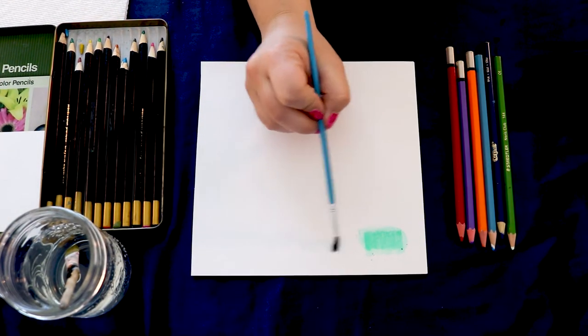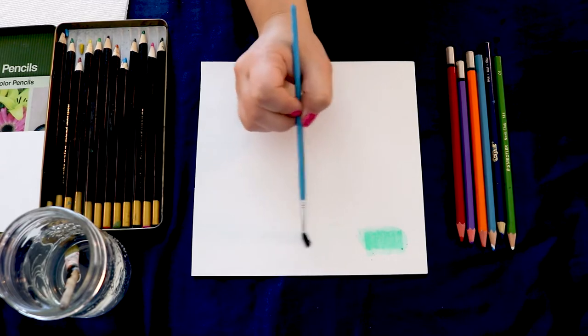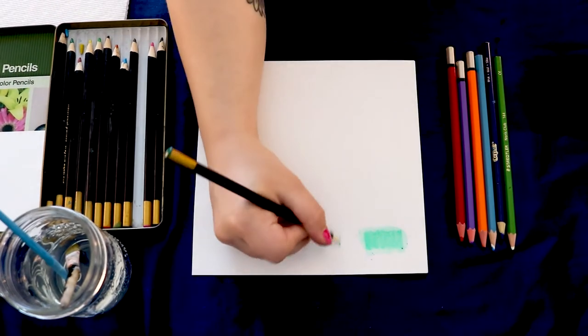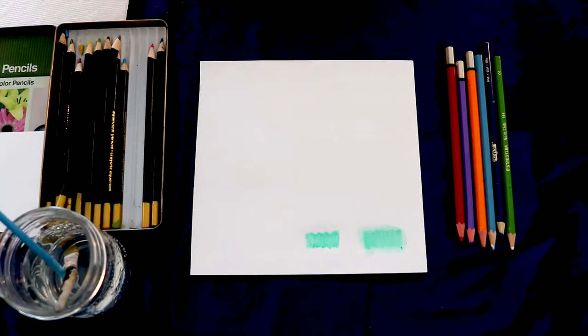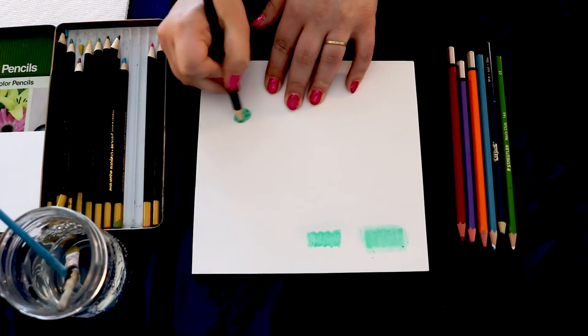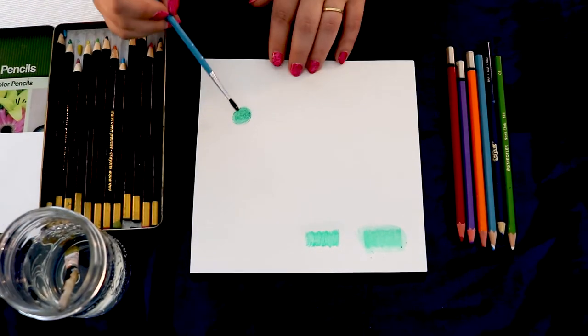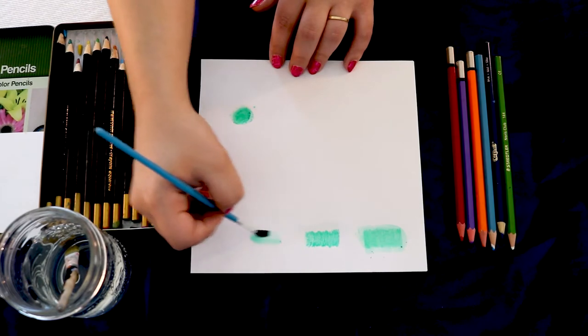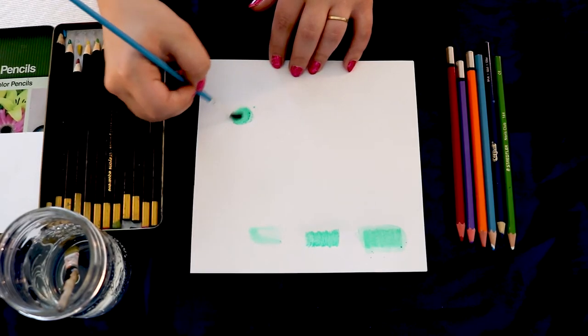You can also add the water to the paper first. You can also use a scrap piece of paper to apply pigment to and use a wet brush to activate the color, then transfer them to your artwork this way.